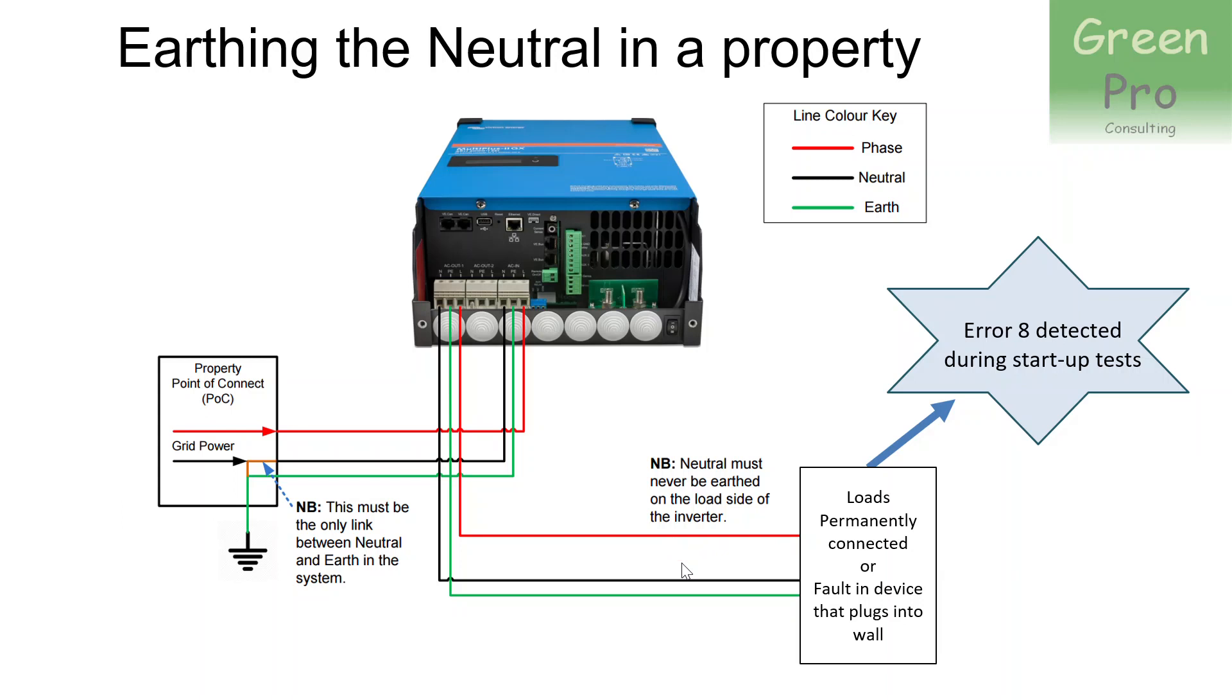Now, the test that they do is to see if there is any leak current. The size of the leak current or the impedance or whatever Victron tests for is a huge secret and they won't tell anybody what it is. I've tried to find out, but I get ignored if I ask the question. But what they test for is that there isn't a leak current between neutral and earth. And if there is, then they won't reboot.